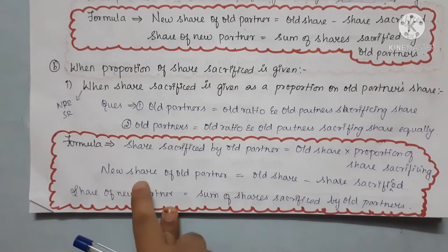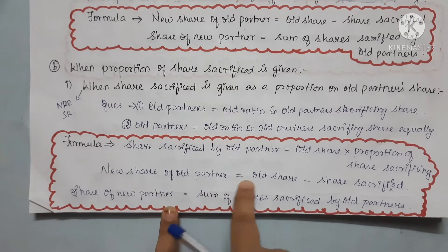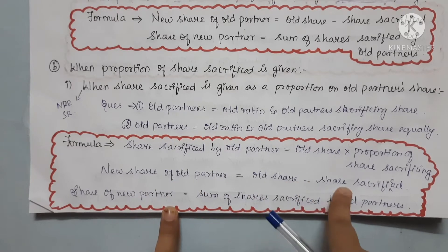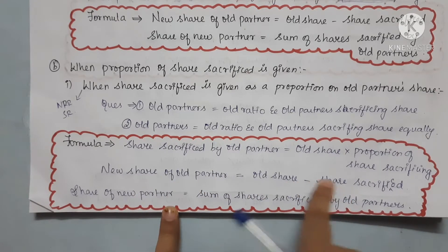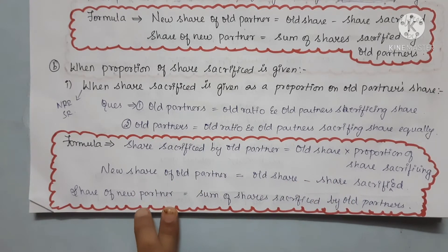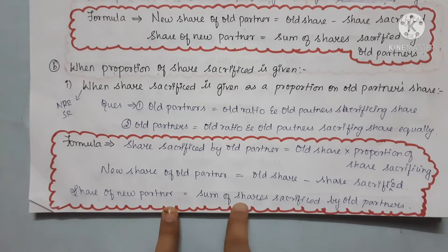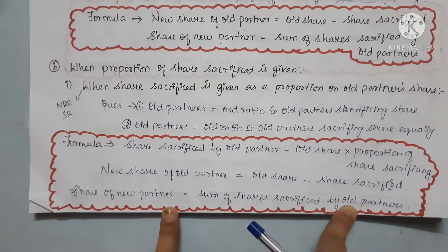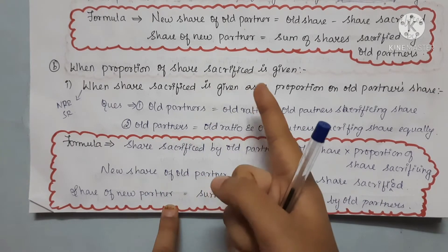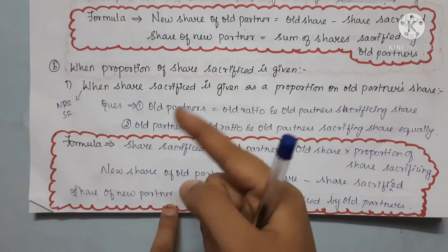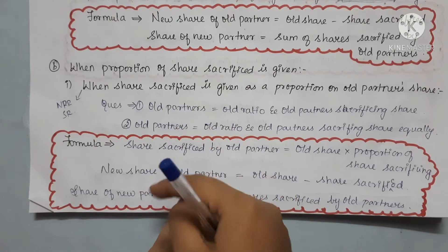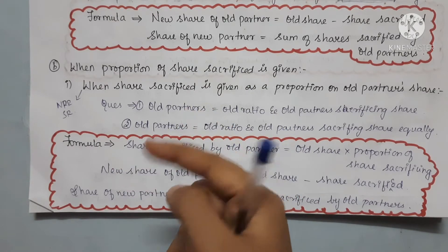We will find the new share. New share equals old share minus share sacrificed. If we look at new partners, we will use the sum of share sacrificed by old partners. The last sum gives us the method.